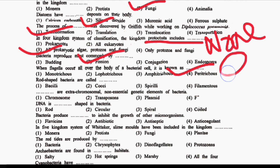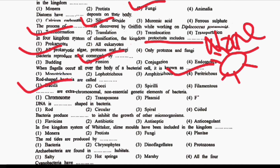The next question is: rod-shaped bacteria are called DASH. Option 1: Bacilli. Option 2: Cocci. Option 3: Spirilli. Option 4: Filamentous. The correct answer is Option 1, that is Bacilli. Note: Bacillus is the singular and Bacilli is the plural form.